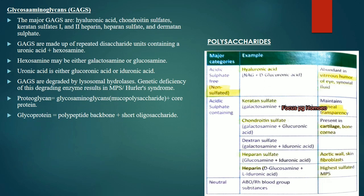Glycosaminoglycans (GAGs): the main GAGs are hyaluronic acid, chondroitin sulfate, keratan sulfate 1 and 2, heparin, heparin sulfate and dermatan sulfate. They are formed by uronic acid and hexosamine. Hexosamines include galactosamine or glucosamine; uronic acids include glucuronic acid or iduronic acid. GAGs are degraded by lysosomal hydrolases. Genetic defects lead to mucopolysaccharidoses (MPS) or Hurler's syndrome.